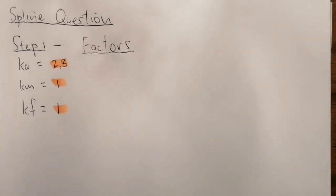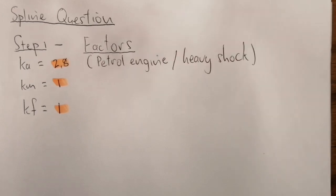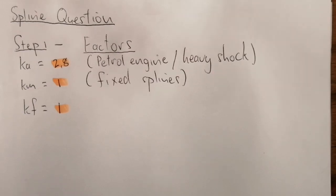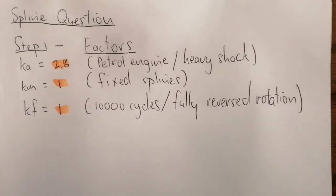Now let's write down the reasons to communicate our design choices. For KA, the reason is the petrol engine as the driver and heavy shock as the driven machine — the punch. We have assumed KM to be 1 for fixed splines. Lastly, KF was selected based on 10,000 cycles of fully reversed rotation.